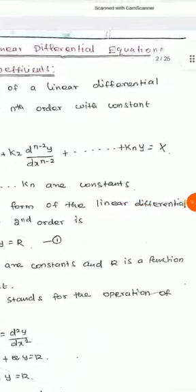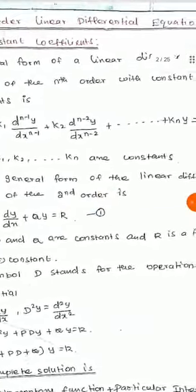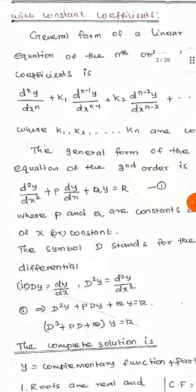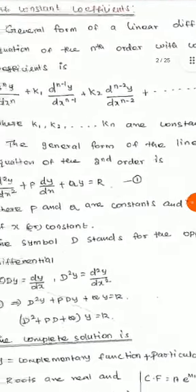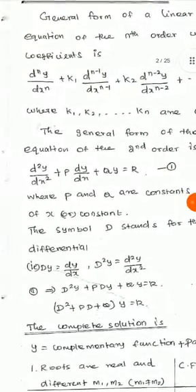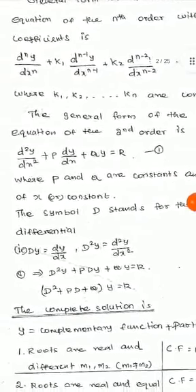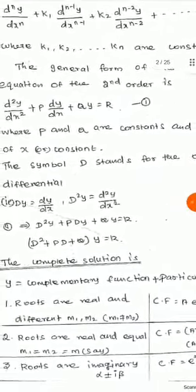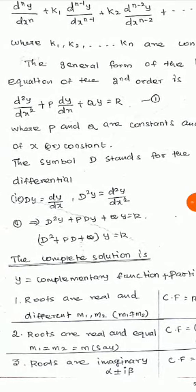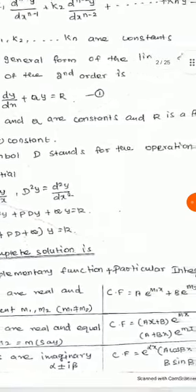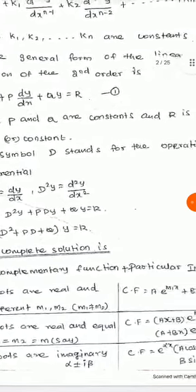The general form of a linear differential equation of the nth order with constant coefficients is: d^n y/dx^n + k1·(d^(n-1)y/dx^(n-1)) + k2·(d^(n-2)y/dx^(n-2)) + ... + kn·y = X, where k1, k2, up to kn are constants. The general form of the second order linear differential equation is d²y/dx² + p·(dy/dx) + q·y = r, where p and q are constants and r is a function of x or a constant.